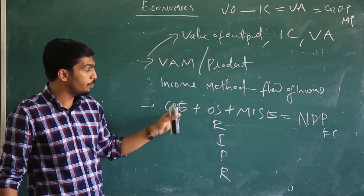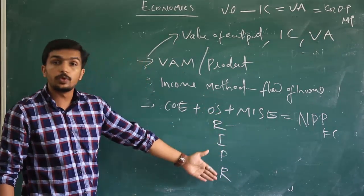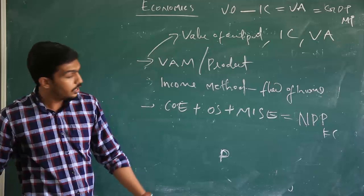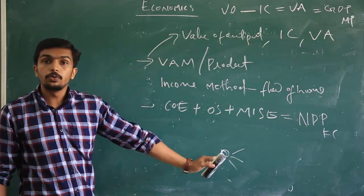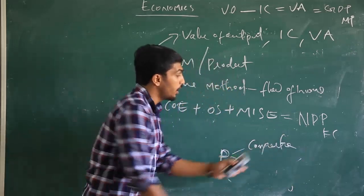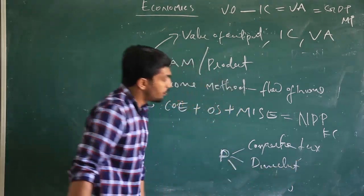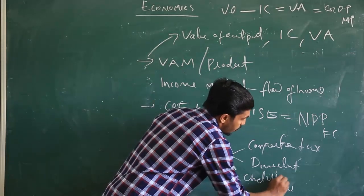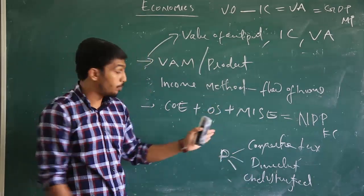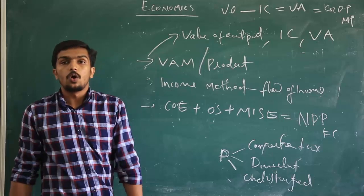When estimating national income using the income method, sometimes these variables are directly given, otherwise the total operating surplus value is given, or any sub-component may be given. For example, profit is a common variable and can be divided into subgroups: corporate tax, dividend, and undistributed profit. These three variables are also considered as components of operating surplus value. Sometimes profit is given directly; otherwise these three sub-variables are provided, and they remain part of the operating surplus value.